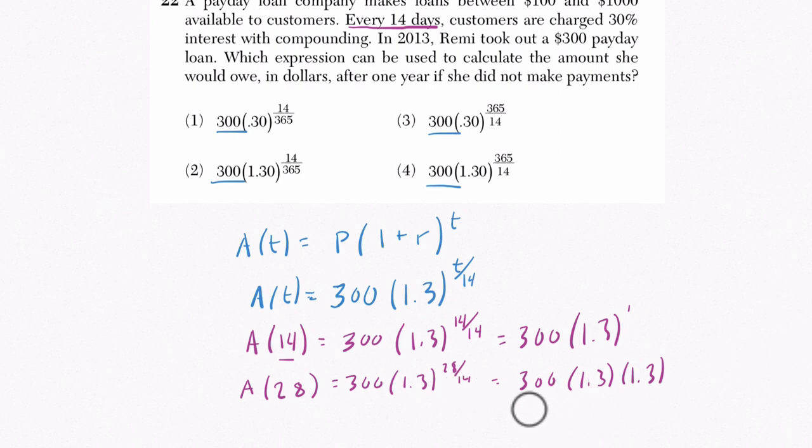And this fits the model because after the first 14 days, she would owe 300 times 1.3. And whatever that is, she would owe 1.3 of that amount. So you're multiplying that previous amount by another 1.3 here.